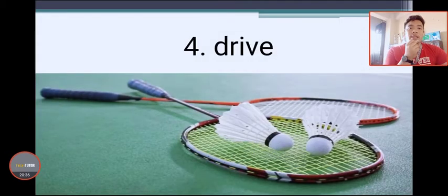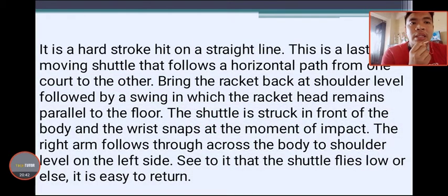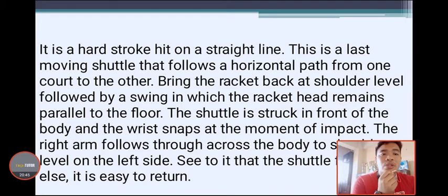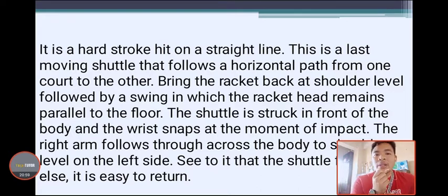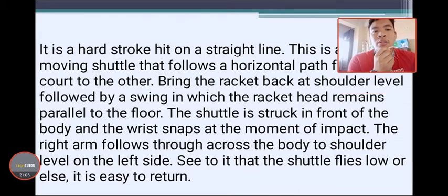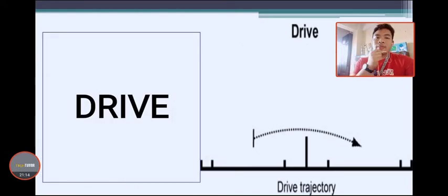The last technique is the drive — a hard stroke hit in a straight line. It is a fast-moving shuttle that follows a horizontal path from one court to the other. Bring the racket back to shoulder level followed by a swing in which the racket head remains parallel to the floor. The shuttle is struck in front of the body and the wrist snaps at the moment of impact. The right arm follows through across the body to the shoulder level on the left side.